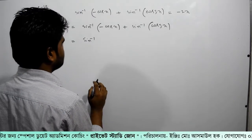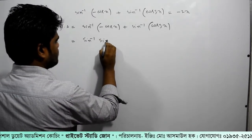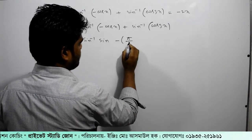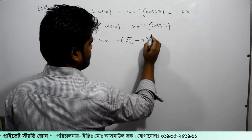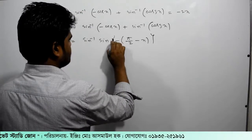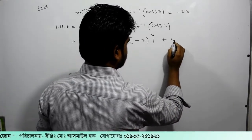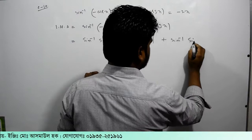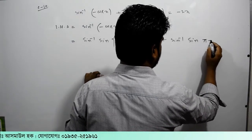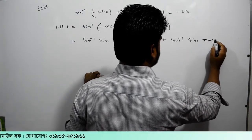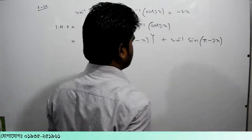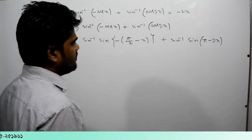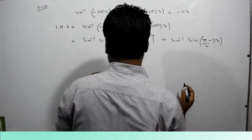We rewrite this as: sin inverse of sin(π/2 minus x), plus sin inverse of sin(π minus 3x), which becomes sin inverse of sin(π/2 minus 3x).